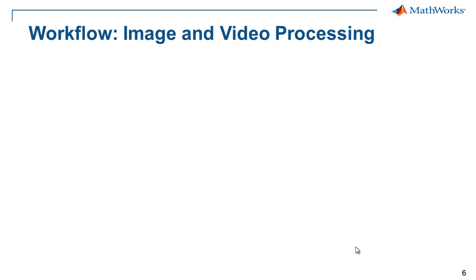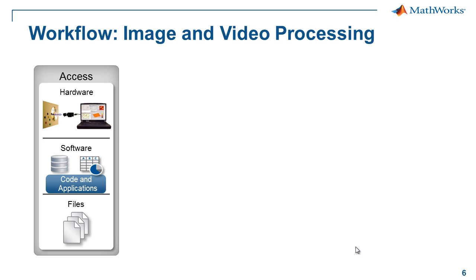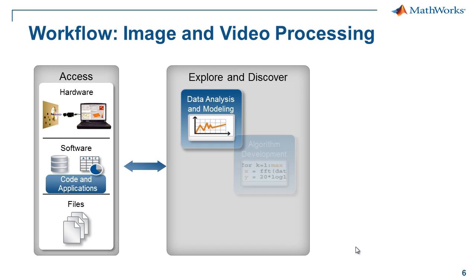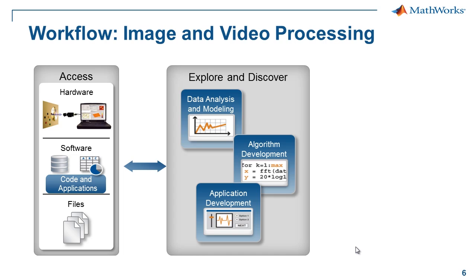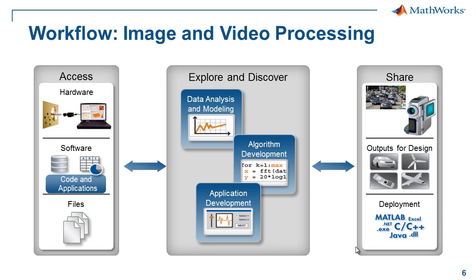Let's go over a typical image and video processing workflow. First, you acquire the data — we call this access. This can come from files like JPEG images, output from other software, or hardware such as a camera, capturing live images and video for on-the-fly processing. Once you acquire your data, you explore it and do some discovery to figure out what you need to create your algorithm. Finally, you share it with colleagues in the form of documentation or libraries, consumed by third-party software to design an end product like a camcorder or automotive vision application.